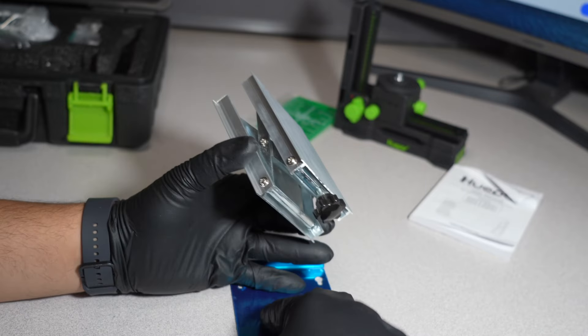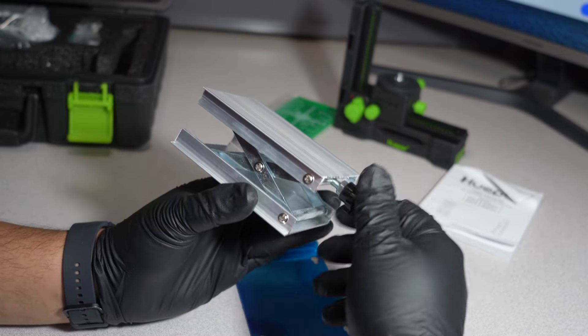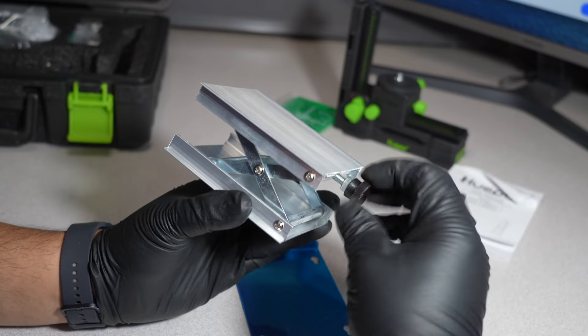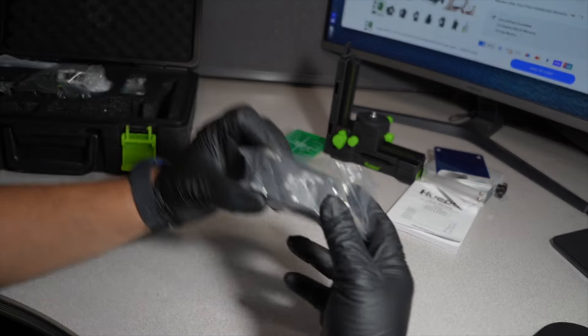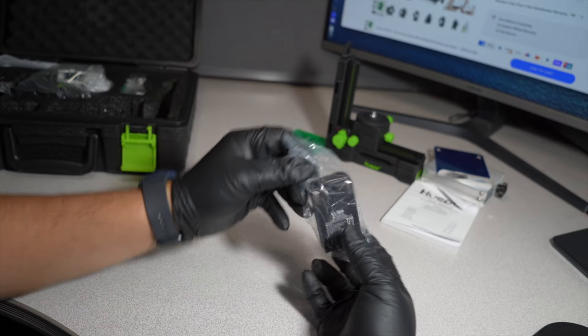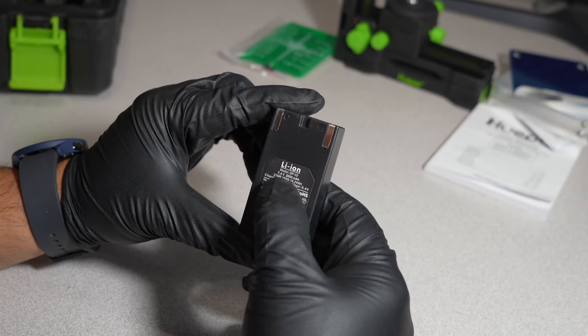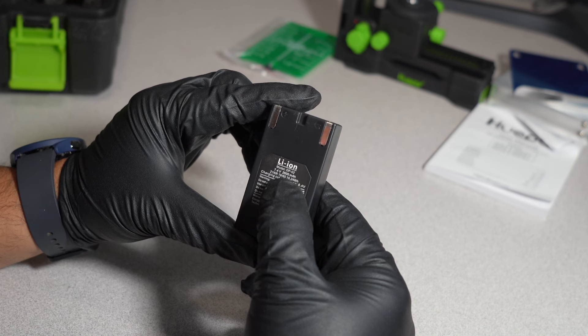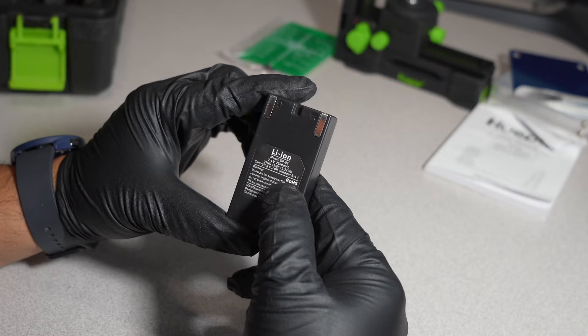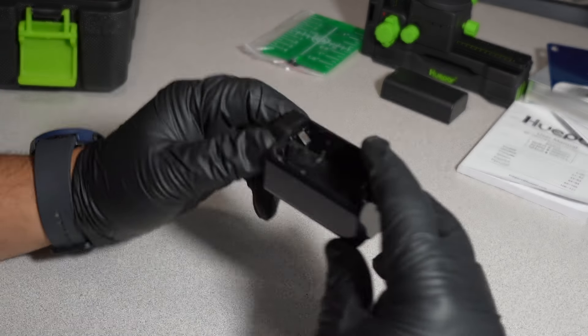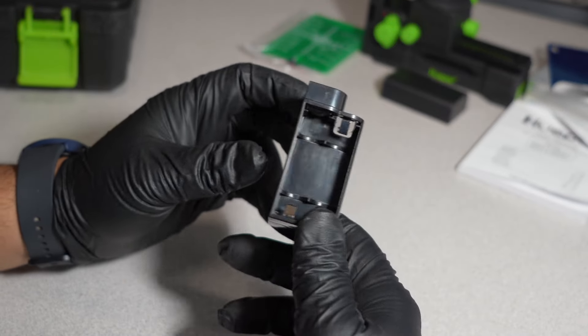And then you got another base here in case you guys want to screw this. All right, here you got a battery. You do have 7.4 volts, 2600mAh, 19.24 watt hours. And then you do have a battery compartment here in case you guys want to use double A batteries.